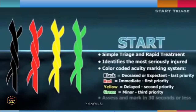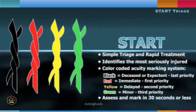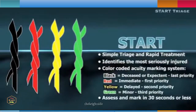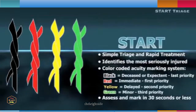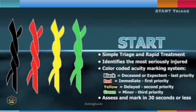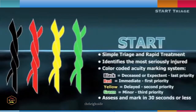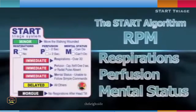The START triage system relies on making a rapid assessment of every patient and marking them with one of four colored acuity categories. Each assessment should take no longer than 30 seconds.